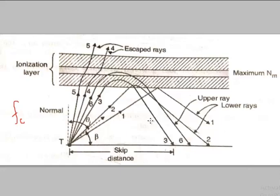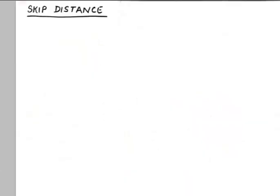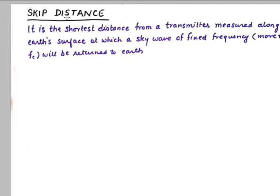So this wave 3, this wave number 3, gives me the shortest distance for a particular frequency at certain angle theta I, and that is known as the skip distance. Again, looking at the definition, it is the shortest distance from a transmitter along earth surface for which a sky wave of fixed frequency will be returned to the earth.